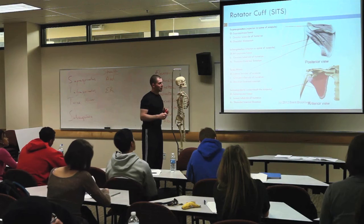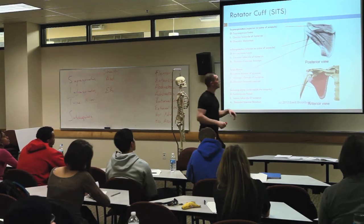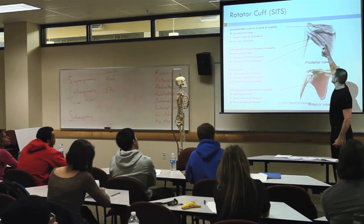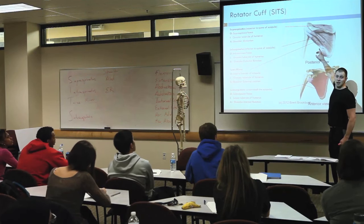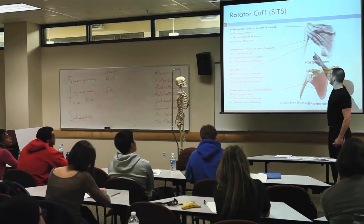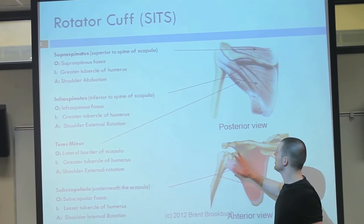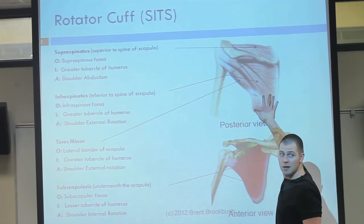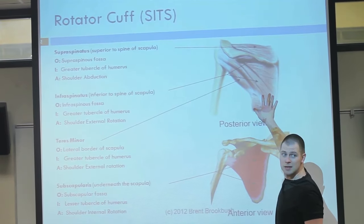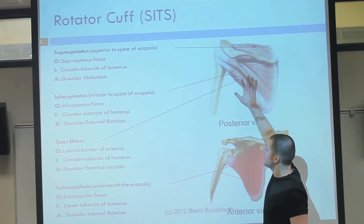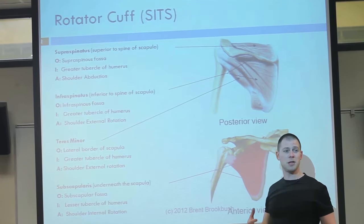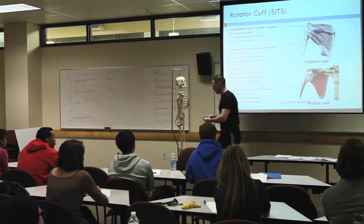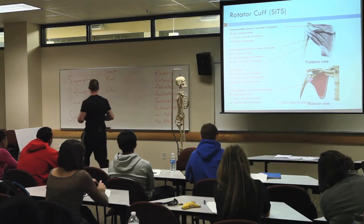Teres minor - can you see how the teres minor and the infraspinatus kind of blend? The teres minor comes off the lateral border of the scapula. It doesn't go all the way over like the infraspinatus does, but they blend and go in the same direction, which means they both contribute to external rotation.